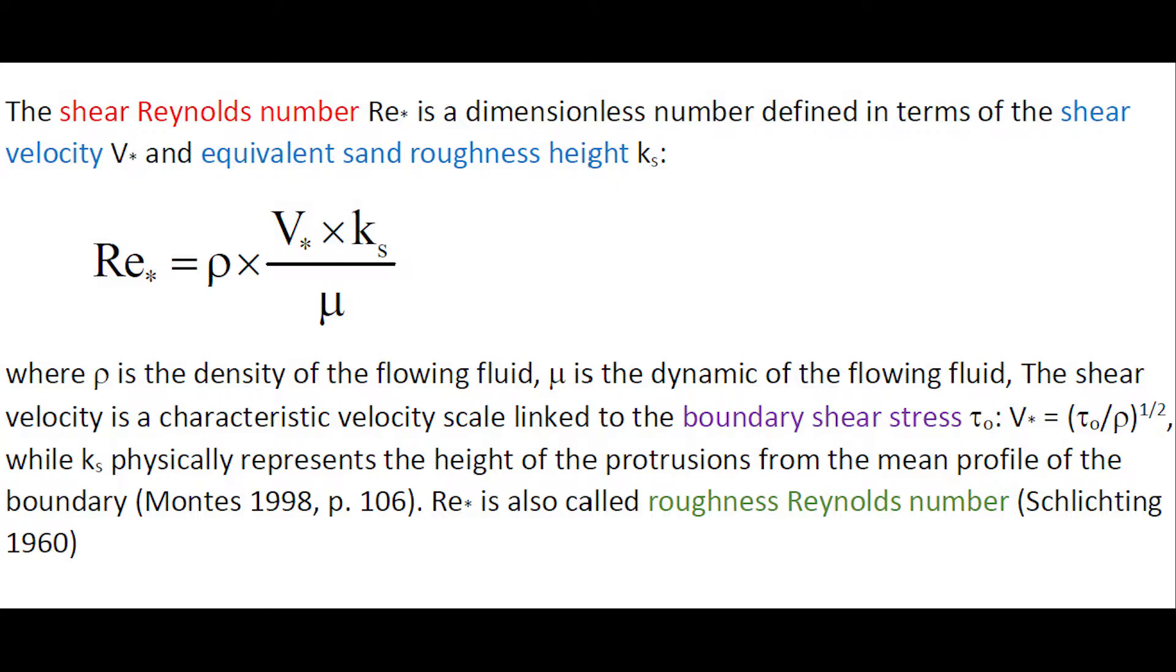The shear Reynolds number is a dimensionless number defined in terms of the shear velocity and equivalent sand roughness height. The shear velocity is a characteristic velocity scale linked to the boundary shear stress.